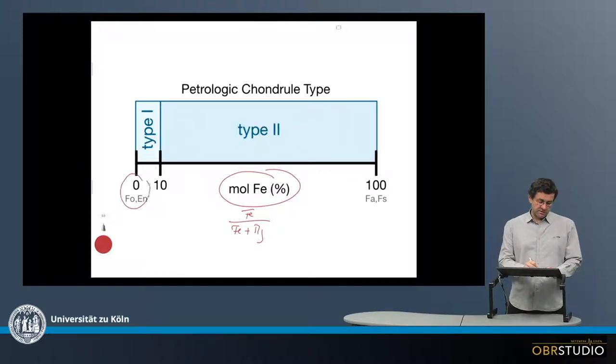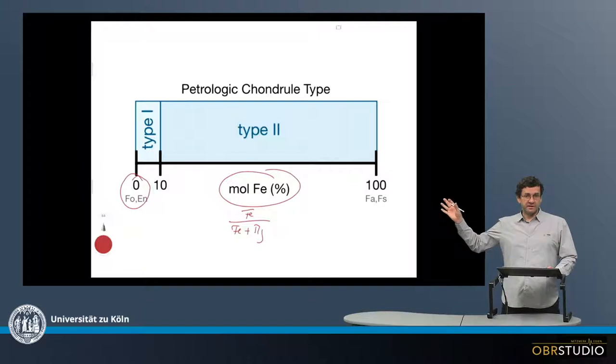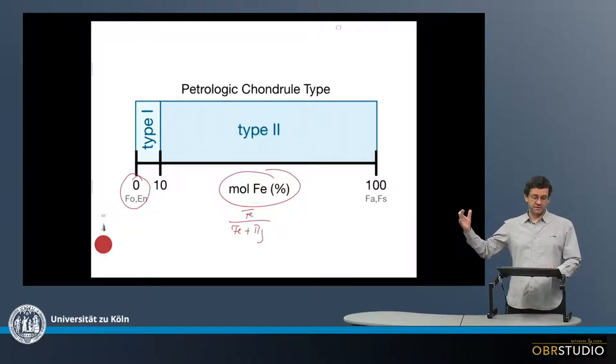On the left here on the x-axis, you have 0% iron, which means there's forsterite and enstatite. Then to the right, there is 100% iron, so there's fayalite and ferrosilite.